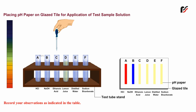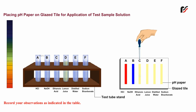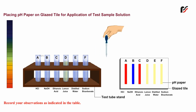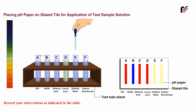On adding the next sample, the pH paper turns red, giving a pH equal to 3.0 — the solution is acidic in nature. On adding the following sample, the pH paper turns red, giving a pH equal to 2.0 — the solution is acidic in nature.